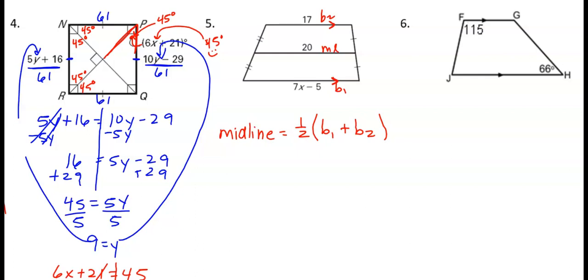So to figure out what x is, we just need to substitute those three things into our formula. So where midline was, we're going to replace that with 20. And where b1 is, we're going to replace that with 7x minus 5. And where b2 is, we're going to replace that with 17. And then it's just an equation that needs solving. So the first thing that we should probably do is combine some like terms. So negative 5 plus 17 is going to give us a positive 12. So 20 equals 1 half, 7x plus 12.